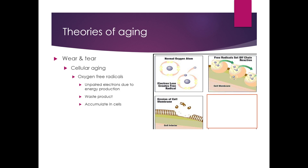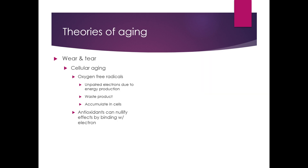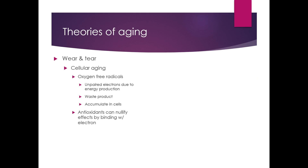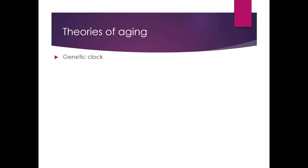The free radicals accumulate in your cells, but there are things you can do. There are antioxidants that help to nullify the effects by binding with the electron. You've probably heard of antioxidants in nutritional things, in makeup. The basic premise is that we want to bind up those free radicals so that they stop harming the cells.